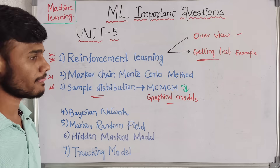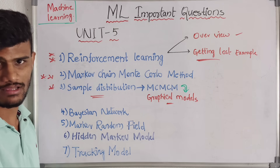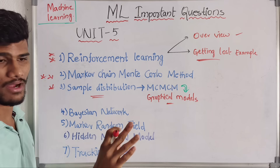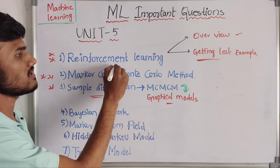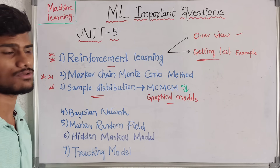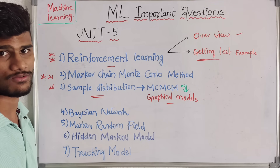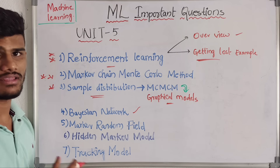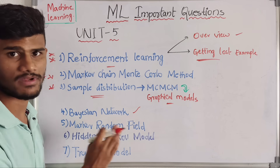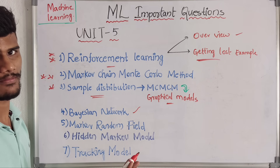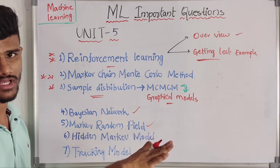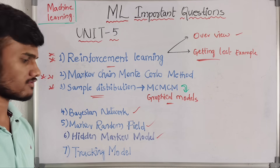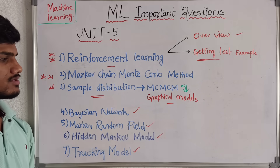The syllabus has parts — up to one part reinforcement learning is the basic question. In the second part we have Bayesian's network — this is an artificial intelligence concept. Then next we have Markov Random Field and Hidden Markov Model — this is also an important question. Then next we have tracking model. So you have these four questions to answer.